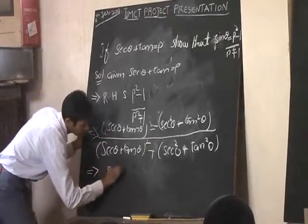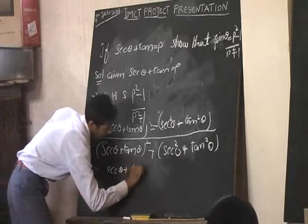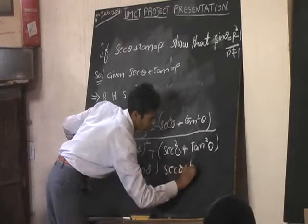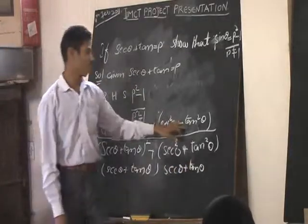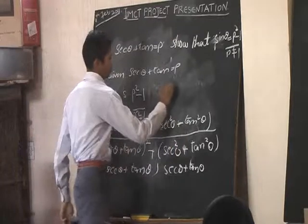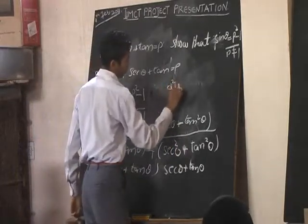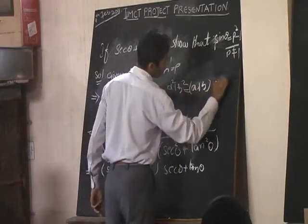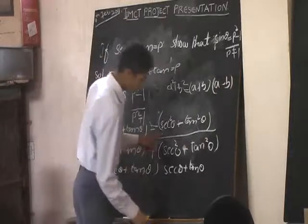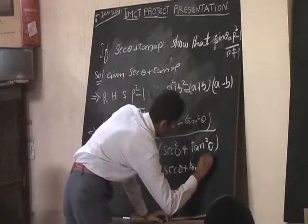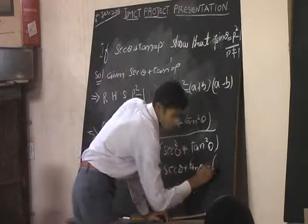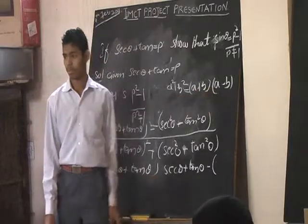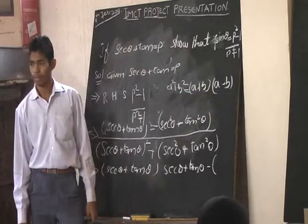The expanded term is sec theta plus tan theta. This form of a squared minus b squared. The formula is a plus b times a minus b. The formula is substituted in this term. A squared minus b squared equals a plus b times a minus b.